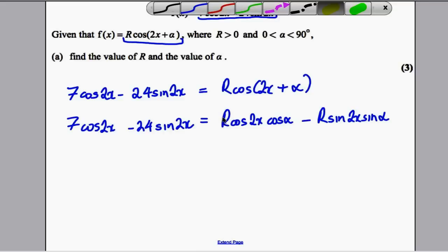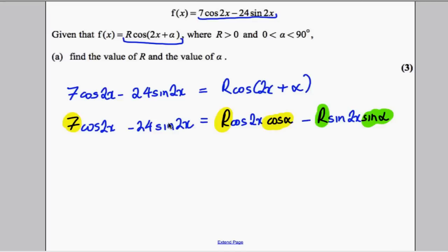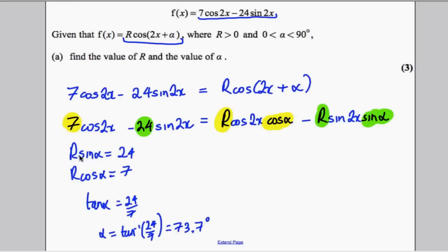Therefore, comparing coefficients: Rcosα must be 7, and Rsinα must be 24. Write those conclusions down. Now, tanα = 24/7. Therefore, α = tan⁻¹(24/7). Keep your calculator in degrees mode because it asks for α in degrees. Inverse tan of 24/7 gives you 73.7 degrees. Also, we need to state R.